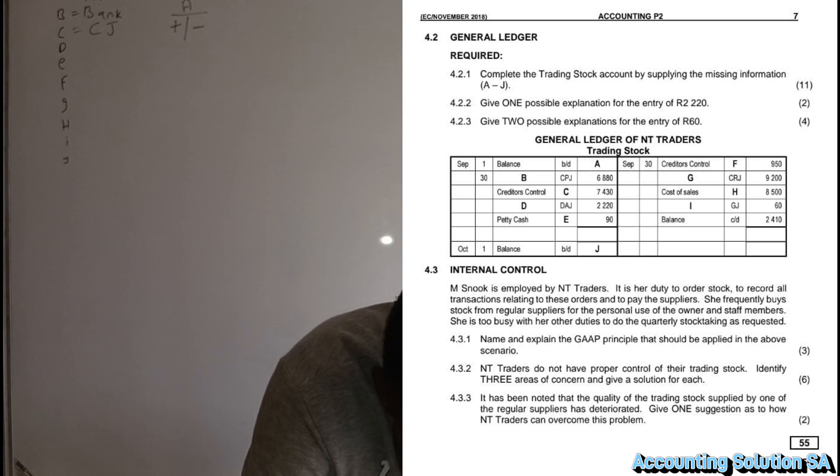Now we have debtor's allowance journal, D-A-J, number D. Now we have to answer what is debtor's allowance journal. When we talk about debtor's allowance journal, simply means that there's stock that has been returned by the customer.